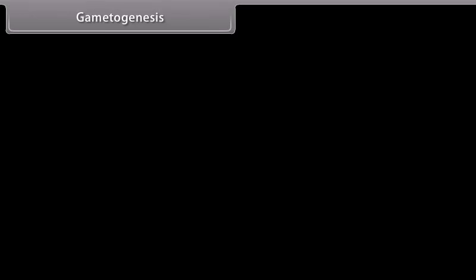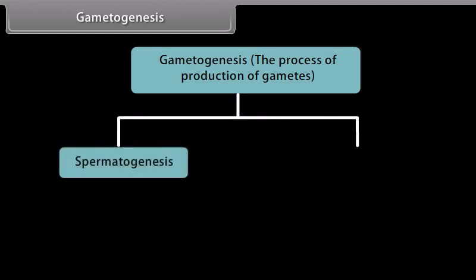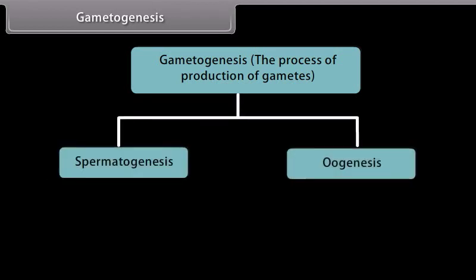Gametogenesis is the process of production of gametes. Males and females of a species have different forms of gametogenesis: spermatogenesis in males and oogenesis in females.